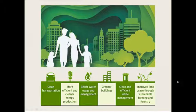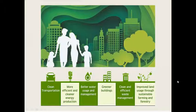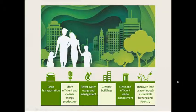Under sustainable development, clean transportation means we should use or build a transport system that causes minimum harm to our environment. More efficient and cleaner energy production — for example, today instead of traditional bulbs we use LED bulbs which consume less electricity, so we need less production and less coal burning, which reduces carbon dioxide emissions. Better water use and management means how we can protect and store water, save drinking water, install sewage water treatment plants, and avoid unnecessary dumping of waste into rivers.